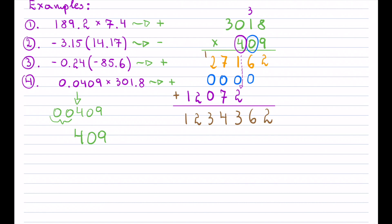Going back to insert the decimals — be careful because there are a lot here. The first number had 4 decimal places and the second had 1, so in total we have 5. Count from the back: 1, 2, 3, 4, 5 — that's the answer, and it's positive.